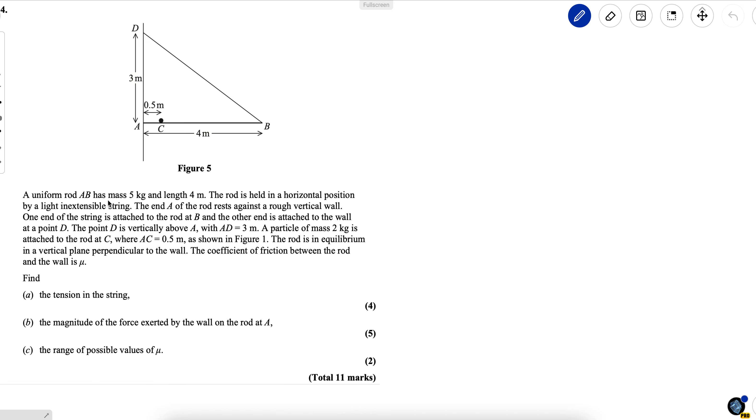A uniform rod AB has mass 5 kilograms and length 4 meters. If it's uniform, that means that the center of mass is right in the center and its weight will be 5 times gravity. Let's just mark this on as 2 meters here.